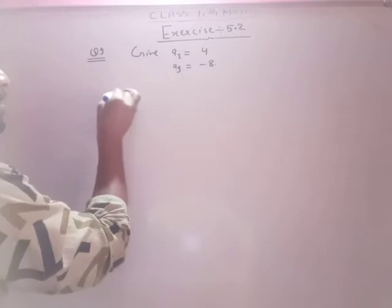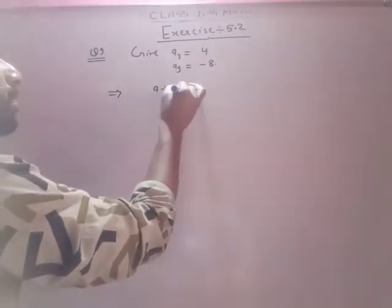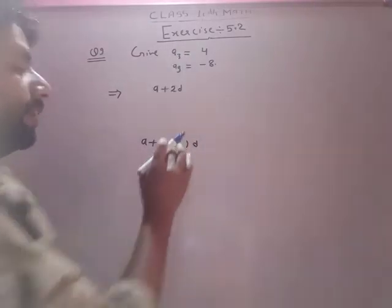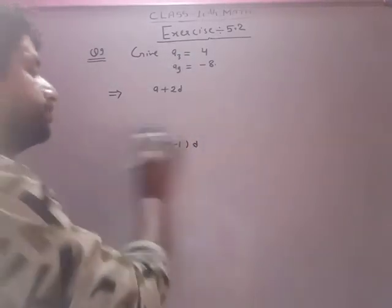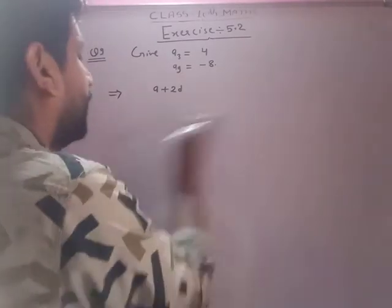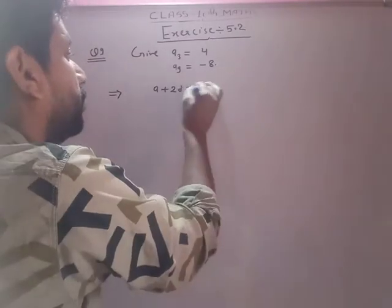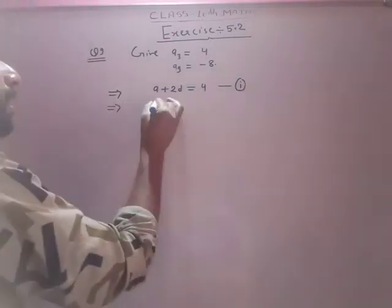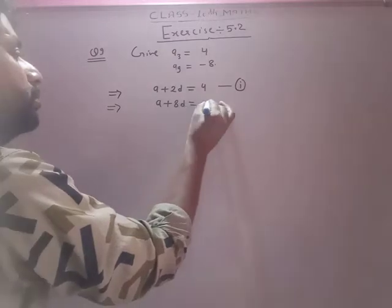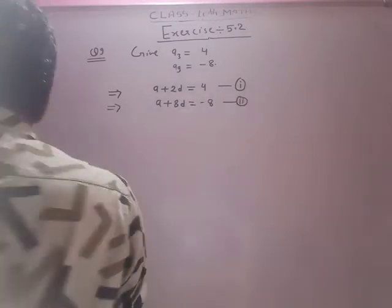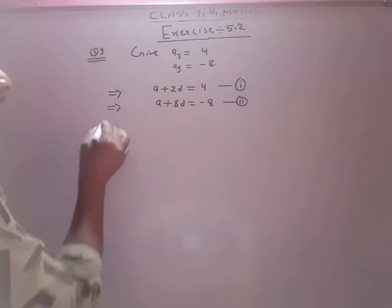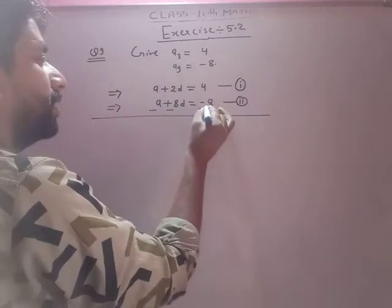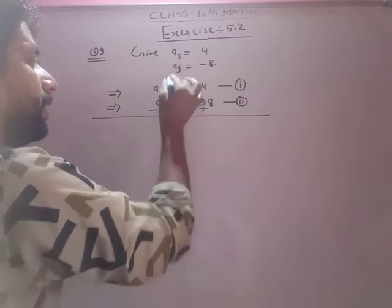According to the given, A3 means a plus 2d equals 4. We write the general term formula as a plus (n minus 1) into d. So A3 = a plus 2d = 4.